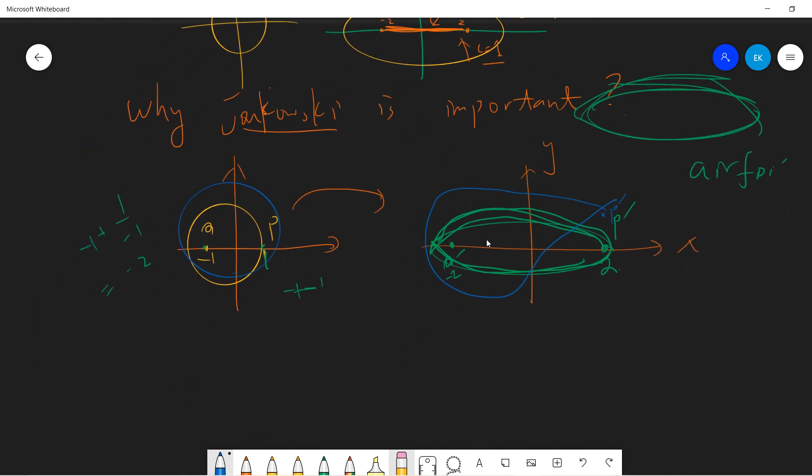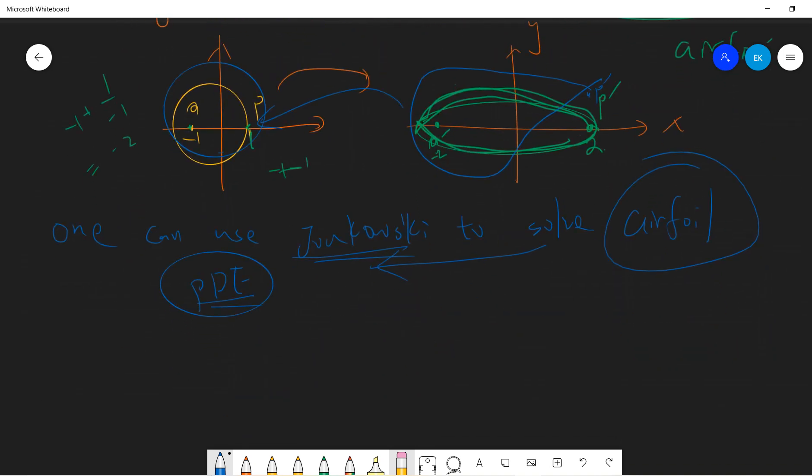So the idea is that one can use Joukowski to solve airfoil PDE. So basically, if you have the airfoil shape PDE, then you cannot solve it. But you can use a Joukowski transformation to go back to the circle. Right. So once you have circle, then you are easily to solve a lot. You can easily solve it. OK.